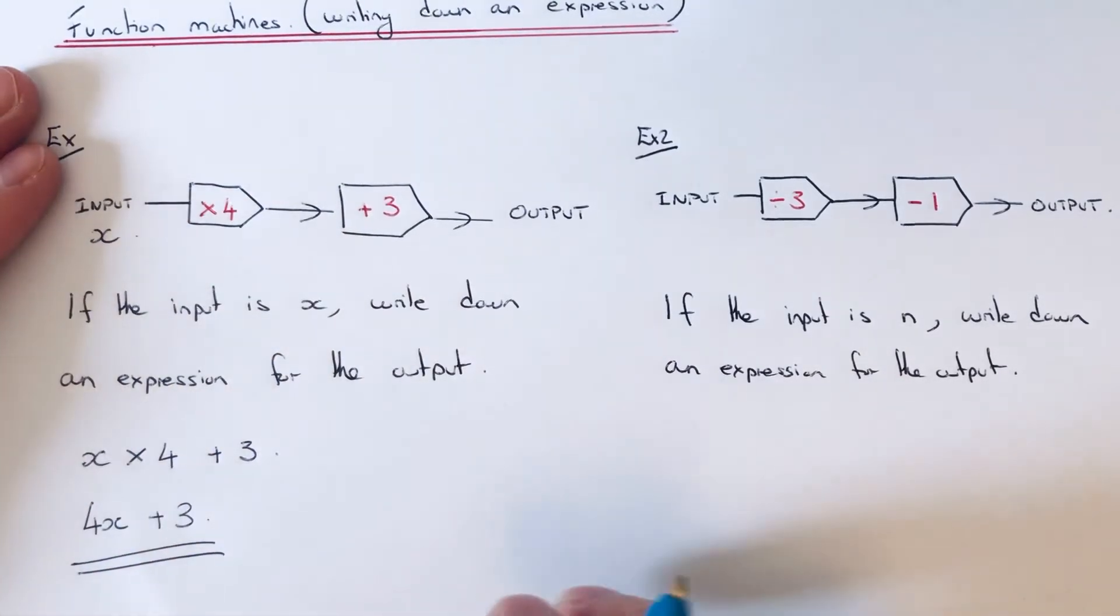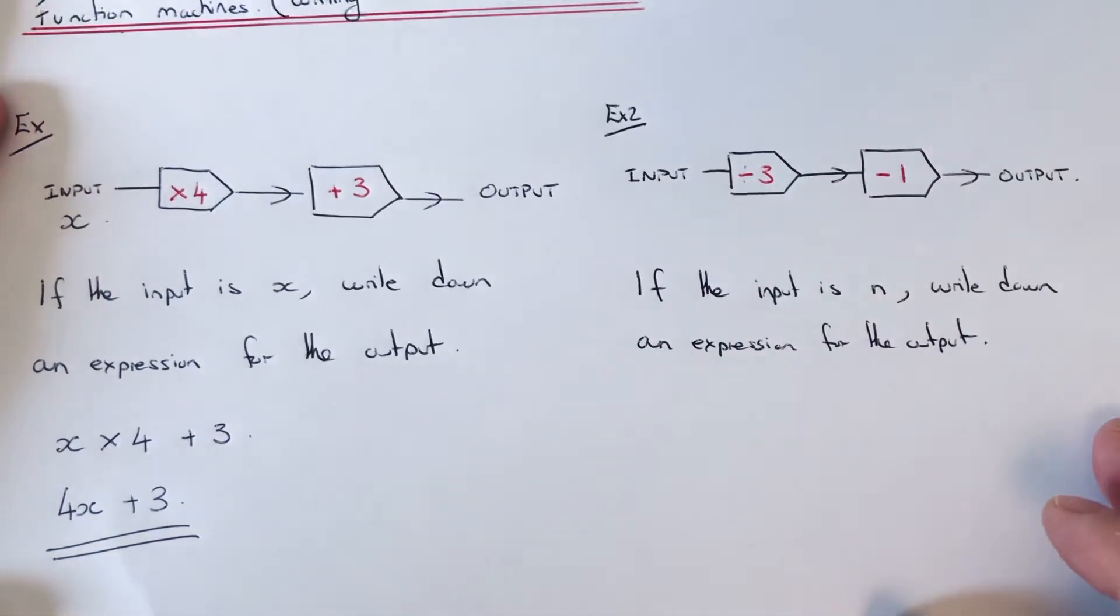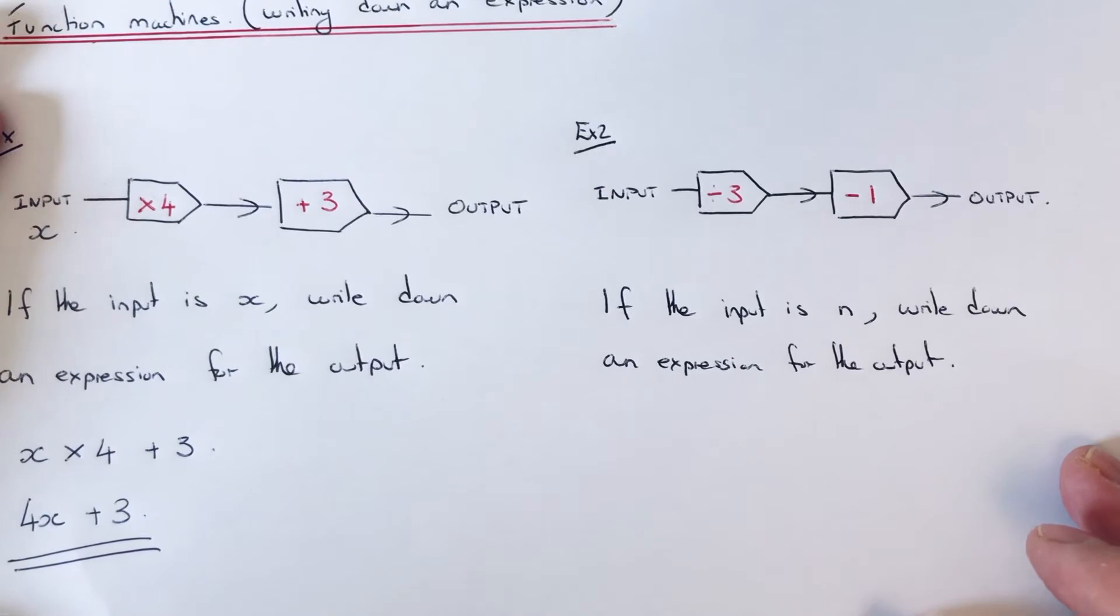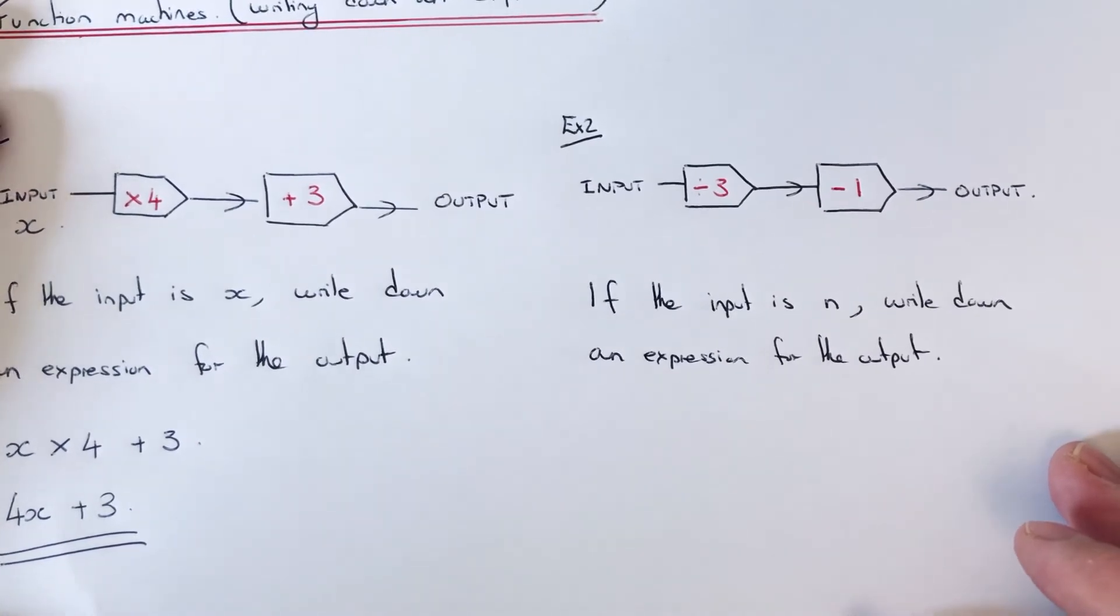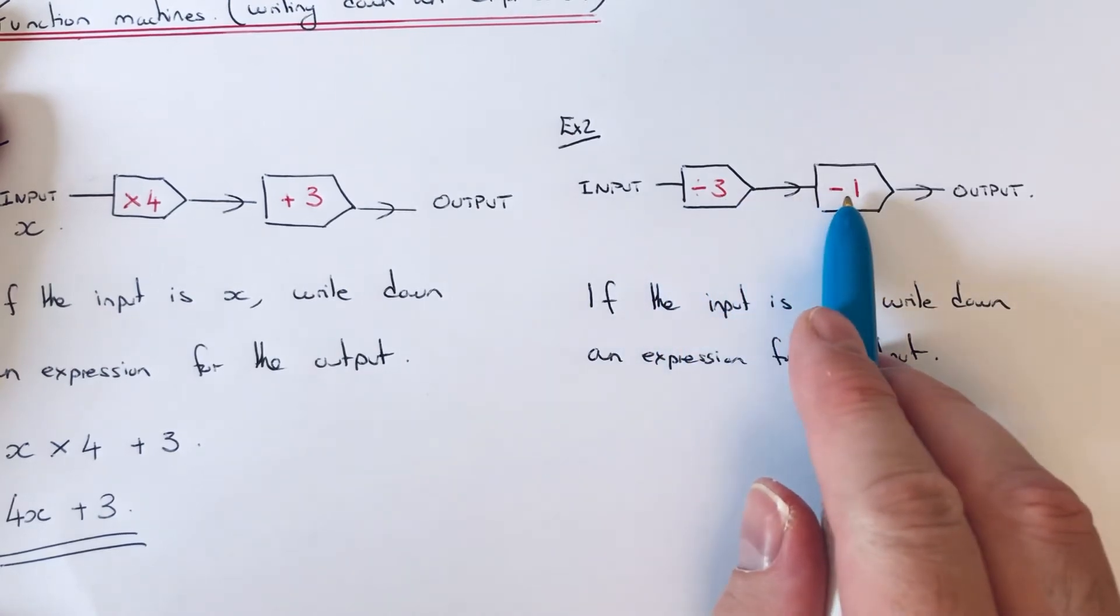So let's have a look at the second example. It says if the input is n, write down an expression for the output. The function machine is divided by 3 and take away 1.